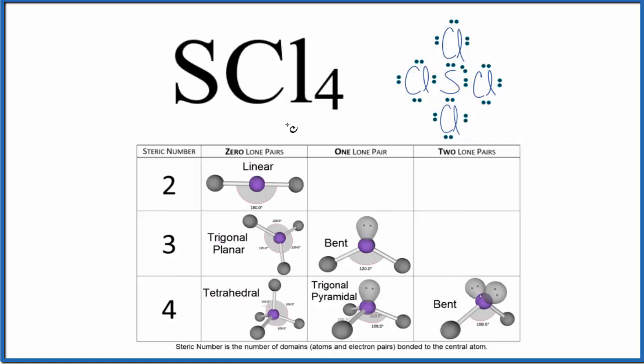So what we're going to do is we're going to look at the steric number, the number of things attached to the central sulfur. So we have one, two, three, four of these chlorine atoms bonded. Then we have this lone pair here. So we have five things bonded to the central atom.